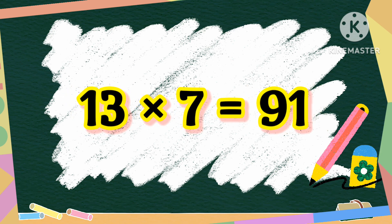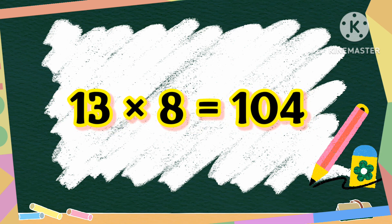13 sevens are 91. 13 sevens are 91. Kids, read all these tables. 13 eights are 104. 13 eights are 104.